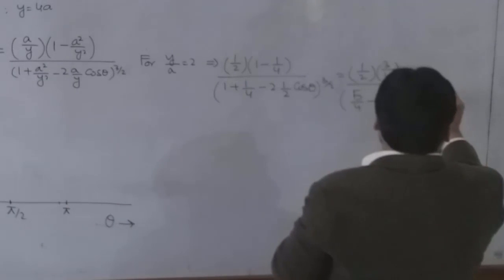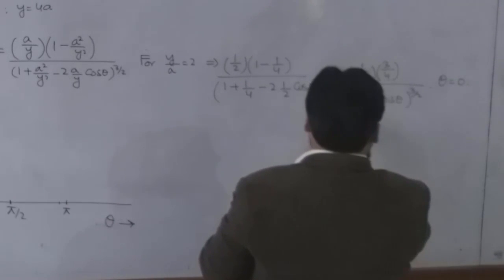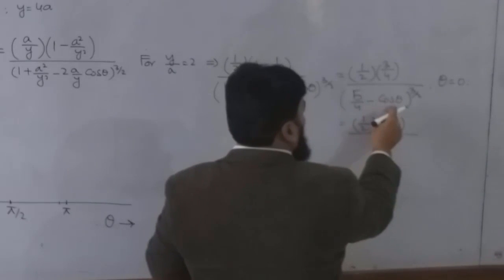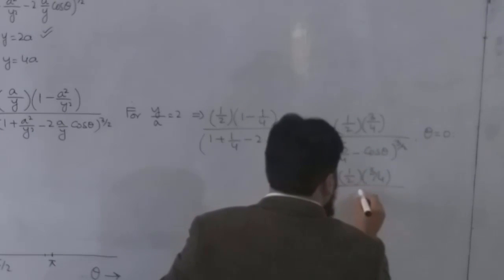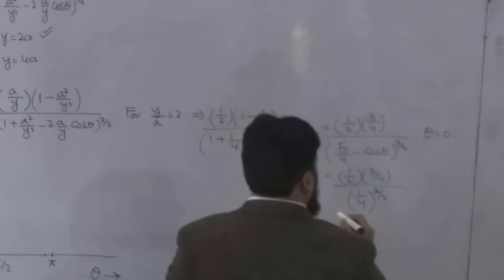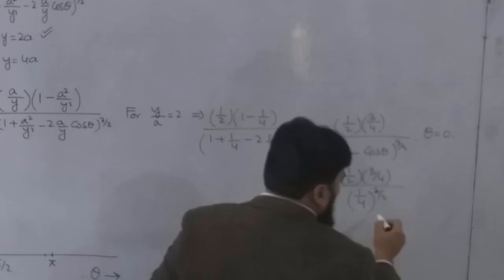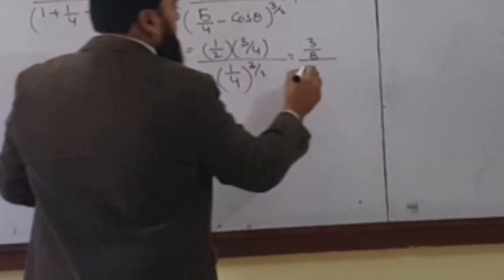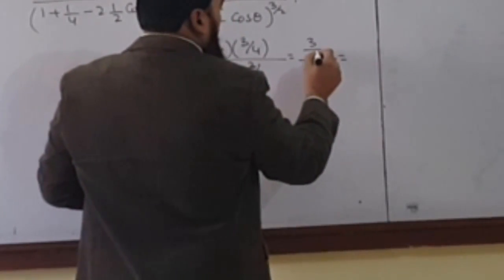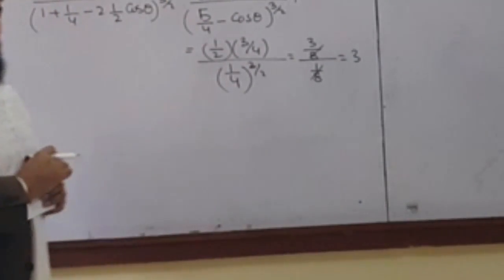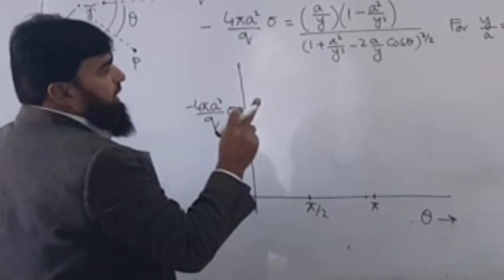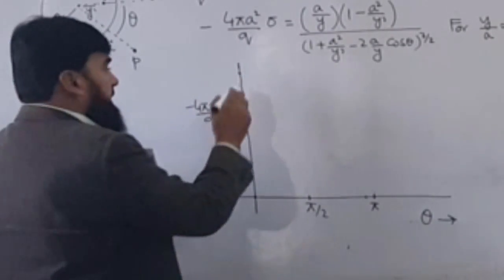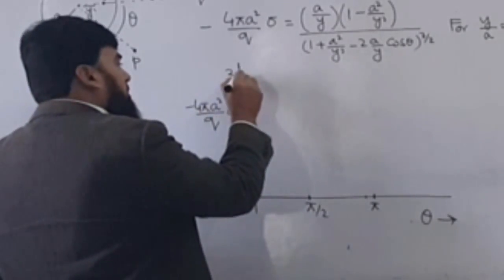For y/a equals 2, this implies that this side is 1/2, and then (1 - 1/4) divided by (1 + 1/4 - 2 times 1/2 cosθ)^(3/2). So this will be equal then, 1/2, and what will be this? 3/4 because 4 minus 1 is 3/4. And what will be this one? 1 plus 1/4, so it will be 5/4, minus cosθ, 3 over 2. Now it is up to the theta. For theta equal to 0, what you will get?